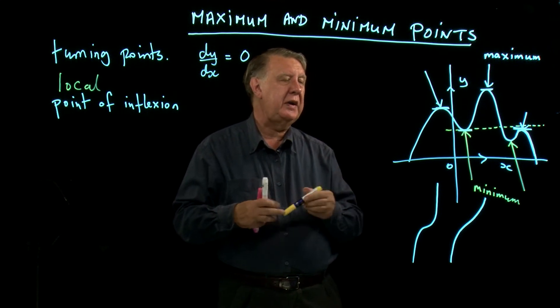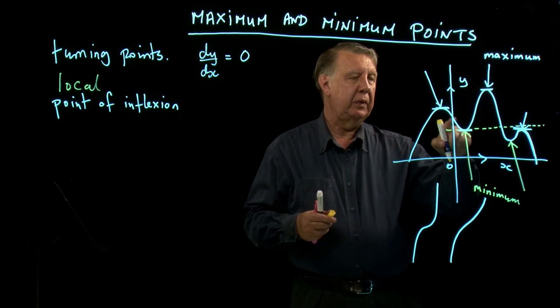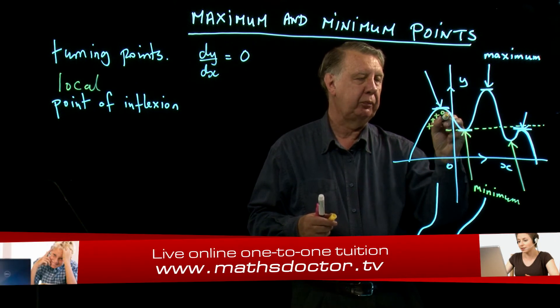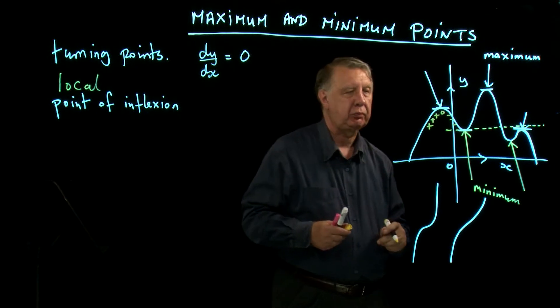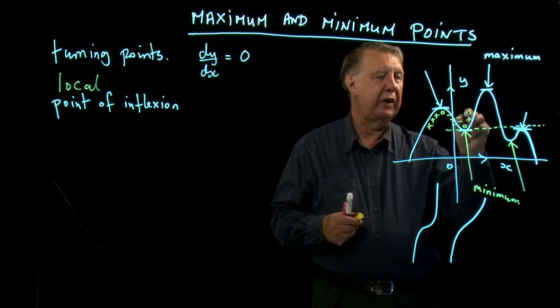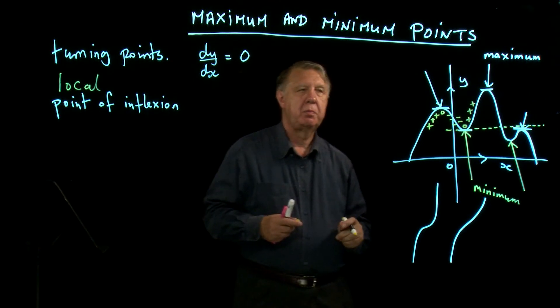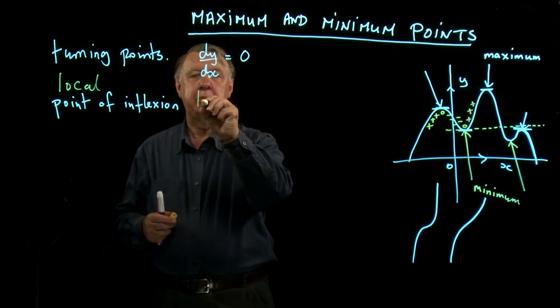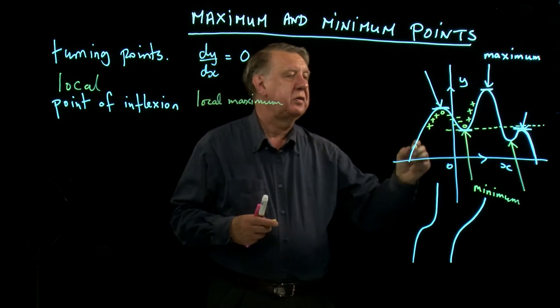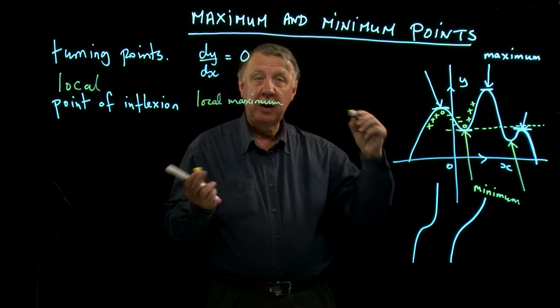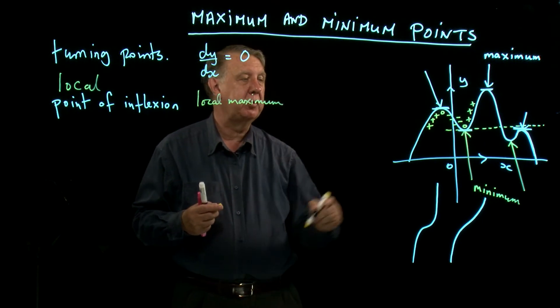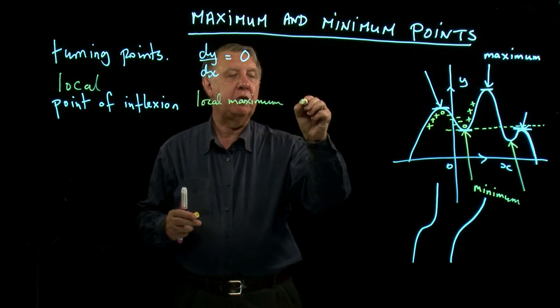Now that doesn't tell us which one it is; it only tells us that it could be either. If you look at what's going on at these points, here if we look at the gradient, it's going plus, plus, plus, naught, minus, minus, minus. On the other side here, it's coming down minus, minus, naught, and then it's going up plus, plus, plus, plus. So at a local maximum, the gradient is going from positive to negative. So what's happening to the gradient? Is it getting bigger or is it getting smaller? It's getting smaller, isn't it?